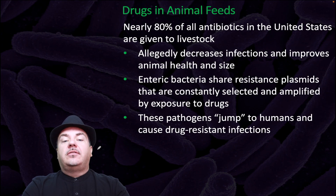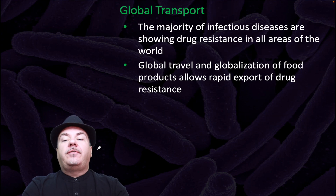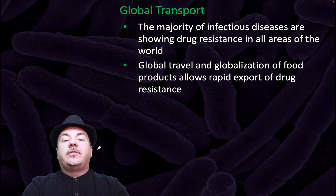How about drugs in animal feeds? Nearly 80% of all antibiotics in the United States are given to livestock. This allegedly decreases infections and improves animal health and size. However, enteric bacteria share resistance plasmids that are constantly selected and amplified by exposure to drugs, and these pathogens can then jump to humans and cause drug resistant infections. The majority of infectious diseases show drug resistance in all areas of the world, and global travel and globalization of food products has allowed rapid export of drug resistance.